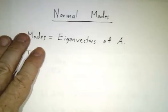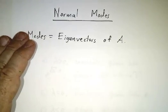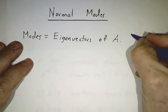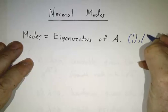Finally, normal modes. When I say a mode, I mean an eigenvector of A. So in this case, the modes are (1, 1) and (3, -2).